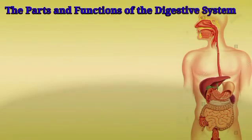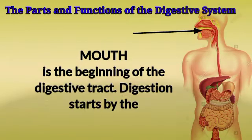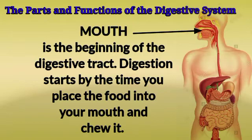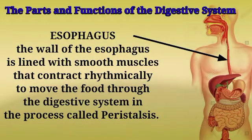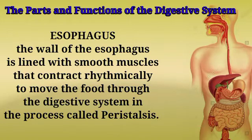What are the functions of the different parts of the digestive system? The mouth is the beginning of the digestive tract — digestion starts the moment you place food into your mouth and chew it. The esophagus has walls lined with smooth muscles that contract rhythmically to move food through the digestive system in a process called peristalsis.